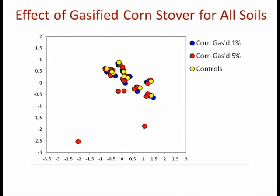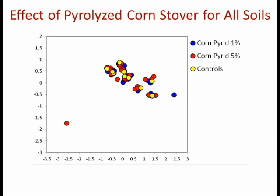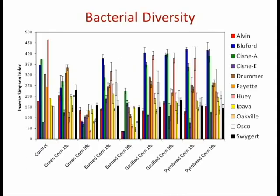We can also see this in looking at bacterial community diversity, based on the DNA sequence data. The 5% green corn stover that shifted community composition is also generally resulting in a decrease in bacterial diversity — the heights of these bars represent the diversity of each community. This fits very well with what we saw for the greenhouse gas flux. When we add the unmodified corn stover, we get a burst in CO2 released by the increased metabolic activity of the microorganisms, causing a change in community composition and an increase in CO2 evolution.